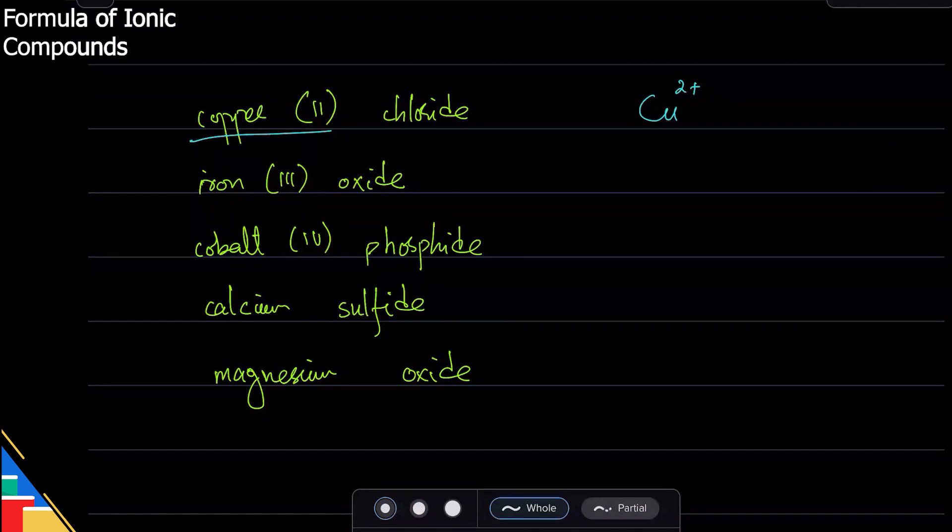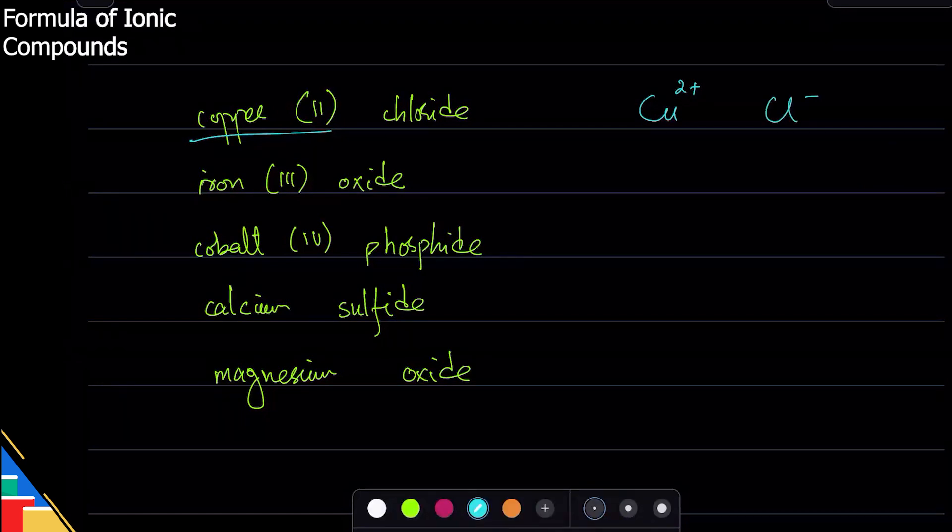Chloride will be Cl minus one. Iron three will be iron three plus obviously. Oxide is O, but how do I know what's the charge? Go to the periodic table.